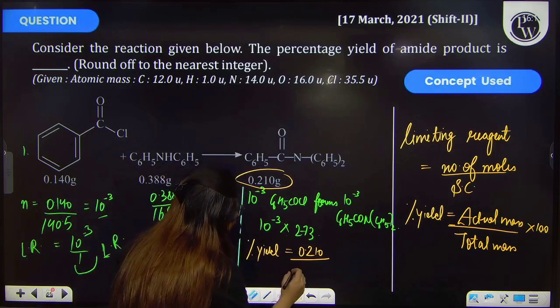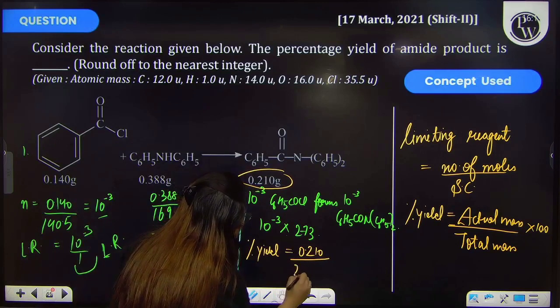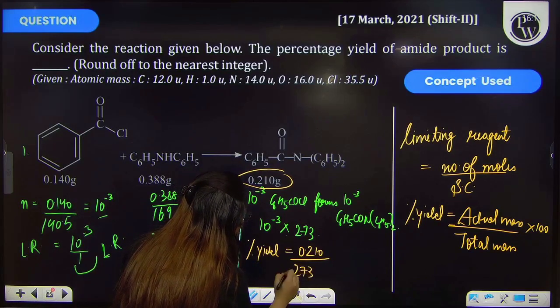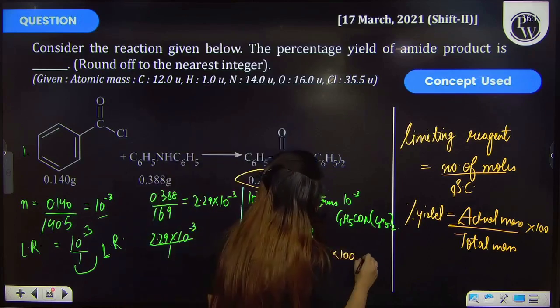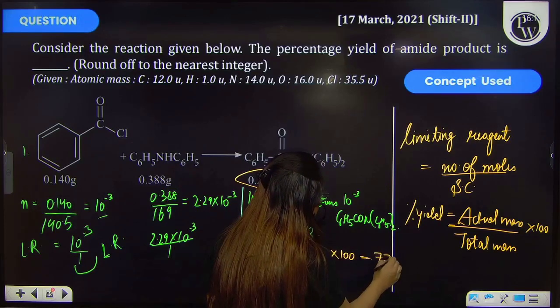So this will be equal to 0.273 into 100. So percentage yield will be 77 percent.